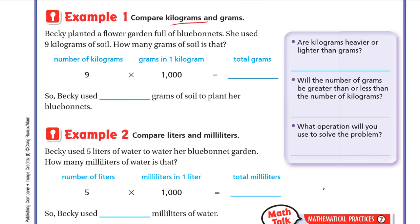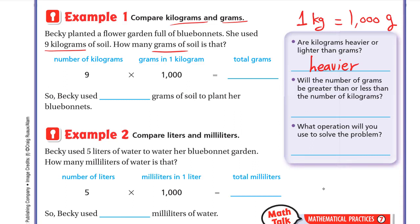Example one: compare kilograms and grams. Becky planted a flower garden and used 9 kilograms of soil. How many grams of soil is that? We have 9 kilograms and need to find the grams. Are kilograms heavier or lighter than grams? Since 1 kilogram equals 1,000 grams, kilograms are heavier than grams.